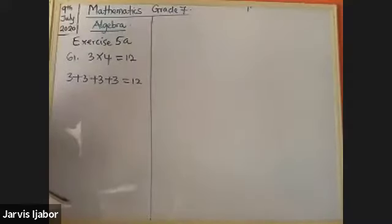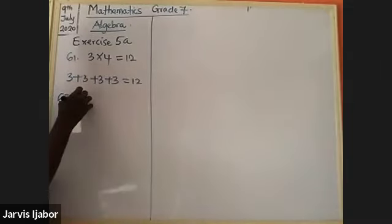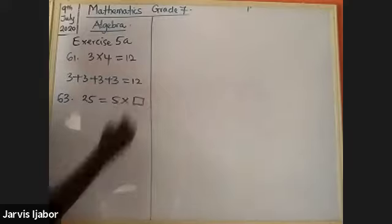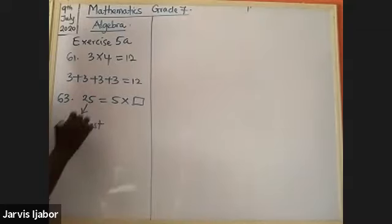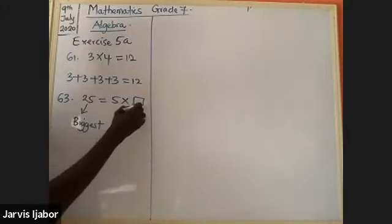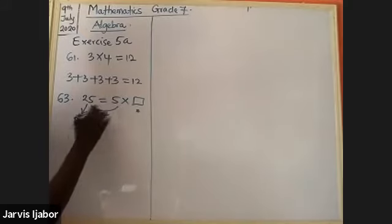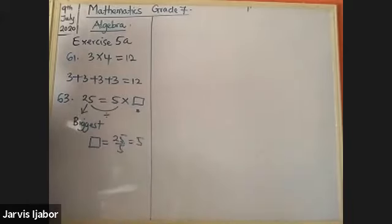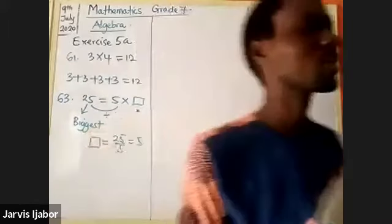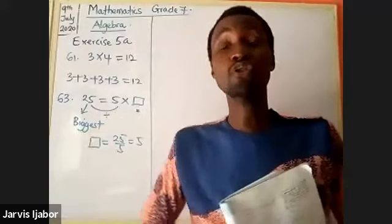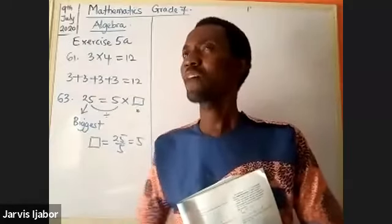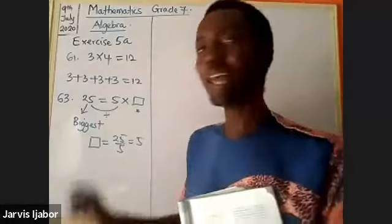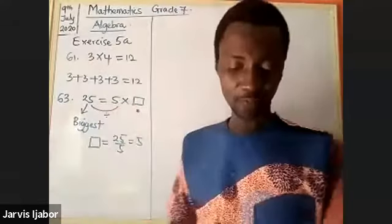Question sixty-three: twenty-five equals five times box. When you multiply a number you get the biggest value, so to find the box you divide: twenty-five divided by five. If dividing seems demanding, read your five multiples — five, ten, fifteen, twenty, twenty-five — the fifth multiple is five, wait the answer is five. That helps you solve it.